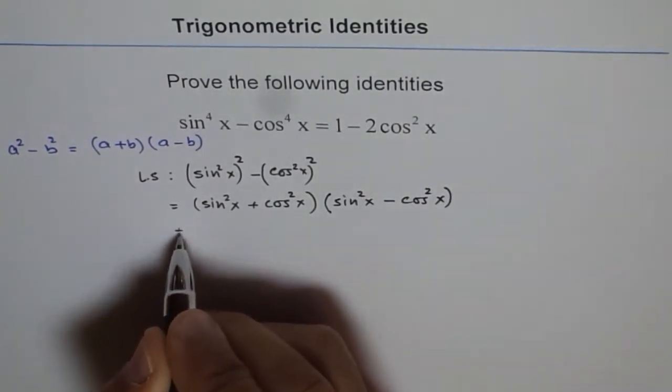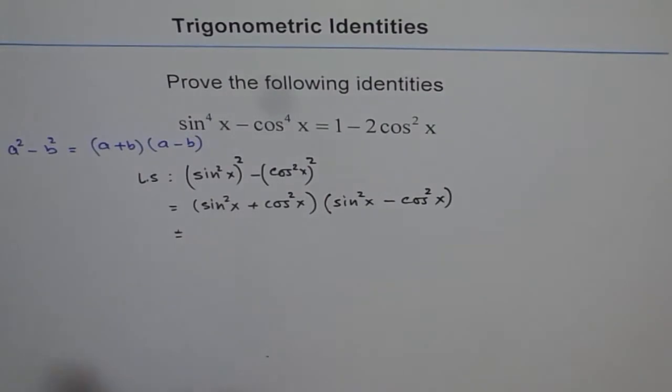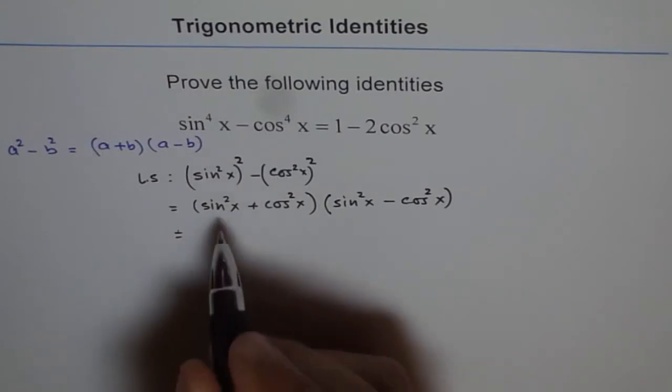Now from here, sin^2x + cos^2x = 1. That is the Pythagorean identity which we know about. So this is 1.